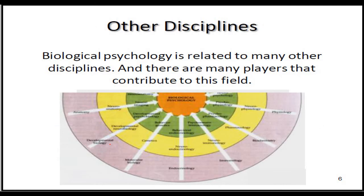Biological psychology or physiological psychology is related to many disciplines, including anatomy, embryology, molecular biology, endocrinology, pharmacology, genetics, and many others. That is why in studying this subject, we will encounter many different disciplines.